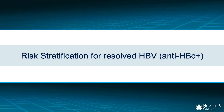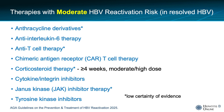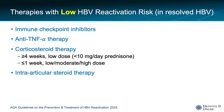Let's look now at risk stratification for those with resolved hepatitis B who are core antibody positive. Therapies with the highest risk for hepatitis B reactivation in those with resolved infection include B-cell depleting monoclonal antibodies, which is the main class of medications to be aware of in this category. Many of the other therapies previously discussed are considered moderate risk in patients with resolved hepatitis B. Low-risk medications include immune checkpoint inhibitors, TNF-alpha inhibitors, and steroids that are four weeks or more but low dose, or less than a week duration. Intra-articular steroid therapy is also low risk for those with resolved infection.